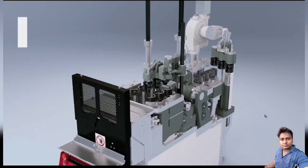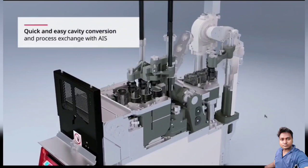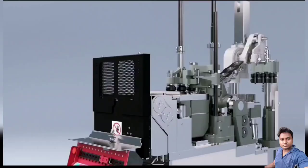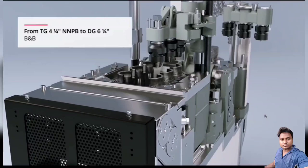Voucher MATLAS AIS Job Change Flexibility. Quick and easy cavity conversion and process exchange with the AIS from TG four quarter NNPB to DG six one fourth blow and blow process.